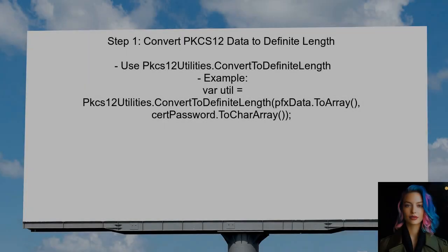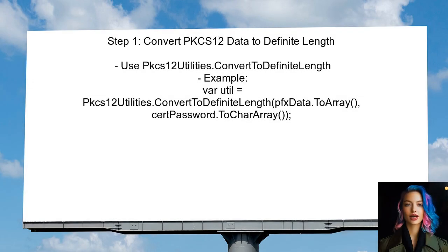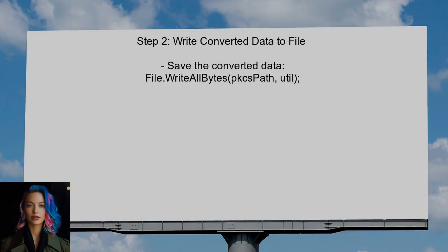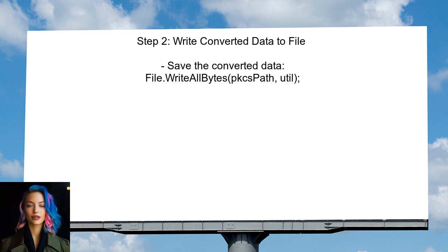To address the issue with the undefined length ASN1 encoding, you should first utilize the PKCS12Utilities class from Bouncy Castle. This class provides a method to convert the PKCS12 data to a definite length format. Next, write the converted data back to a file — this step is crucial as it prepares the data for the X509Certificate2 constructor.